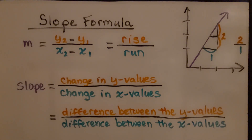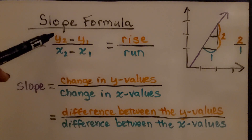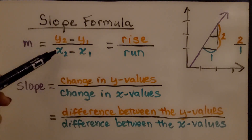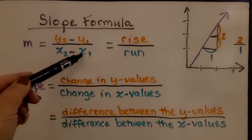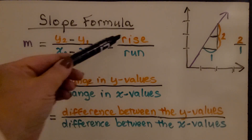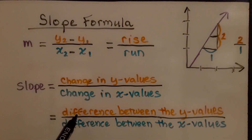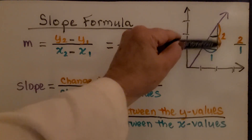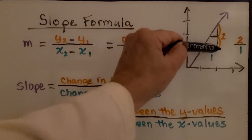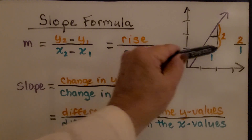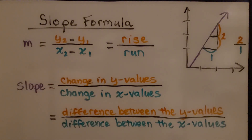We've learned the slope formula. M is slope, and it's equal to the second y-value minus the first y-value over the second x-value minus the first x-value in an ordered pair. It's the rise over run — the change in y-values over the change in x-values. The rise is how many units up in a right triangle, and the run is how many units are going horizontally across.